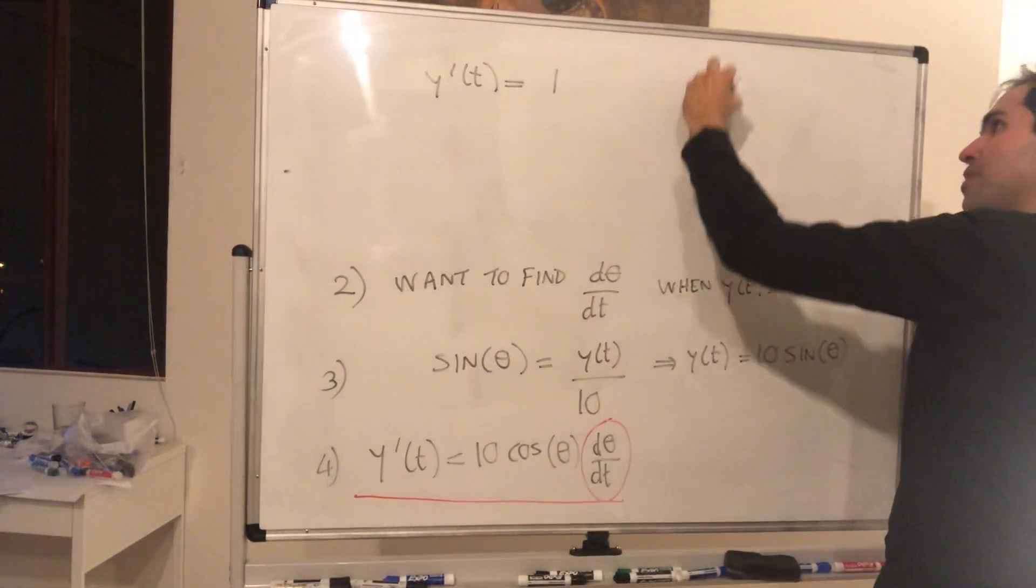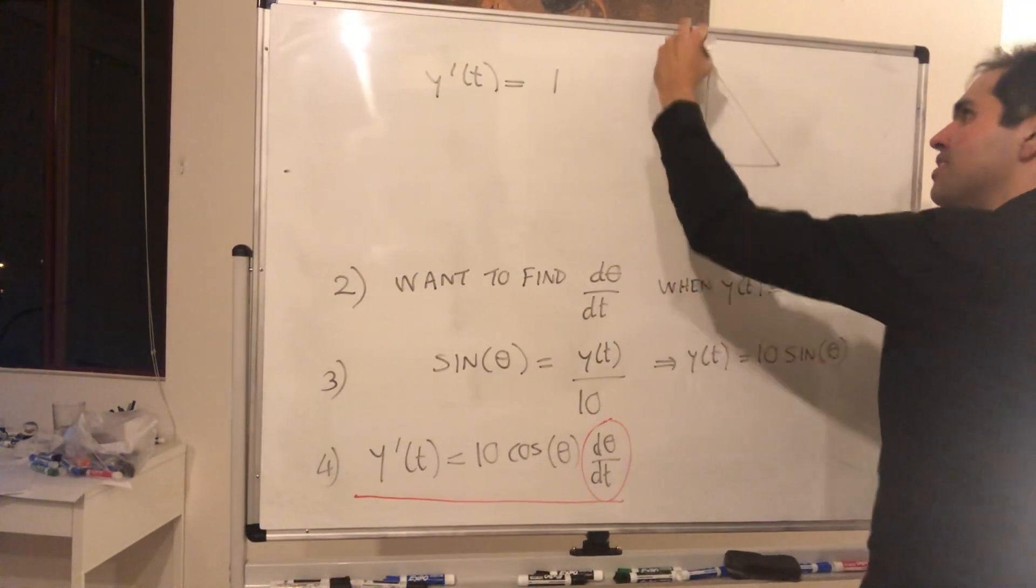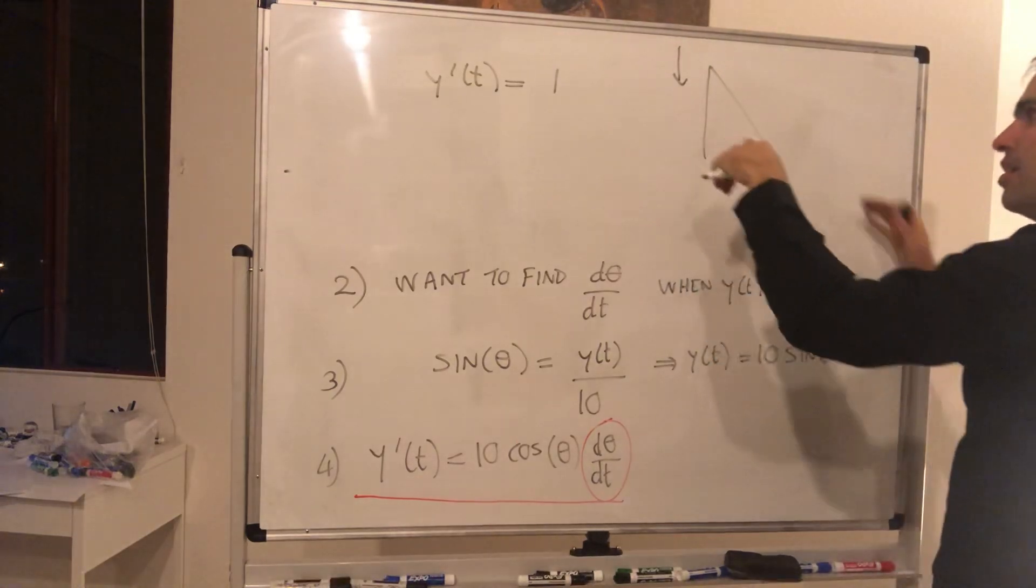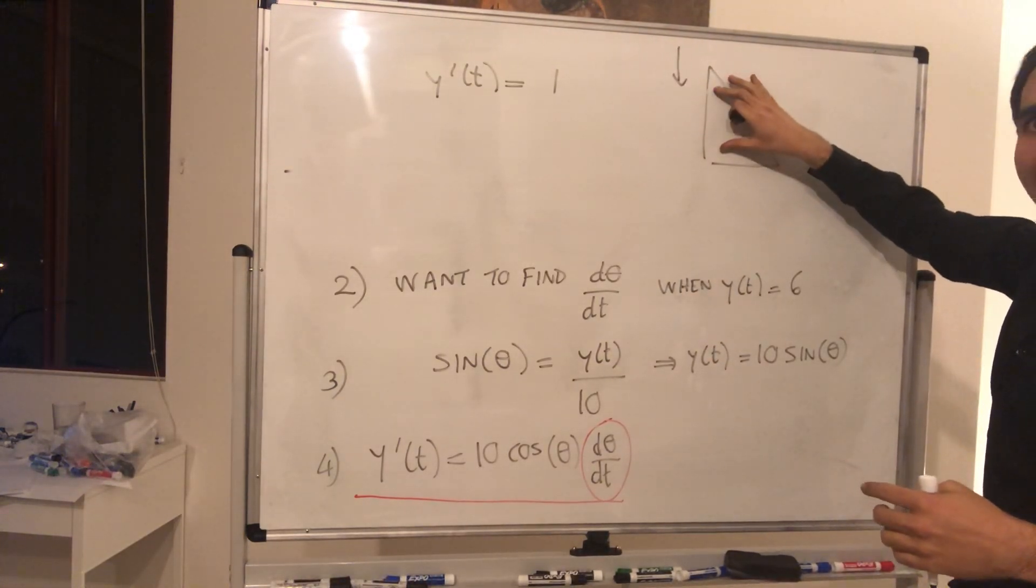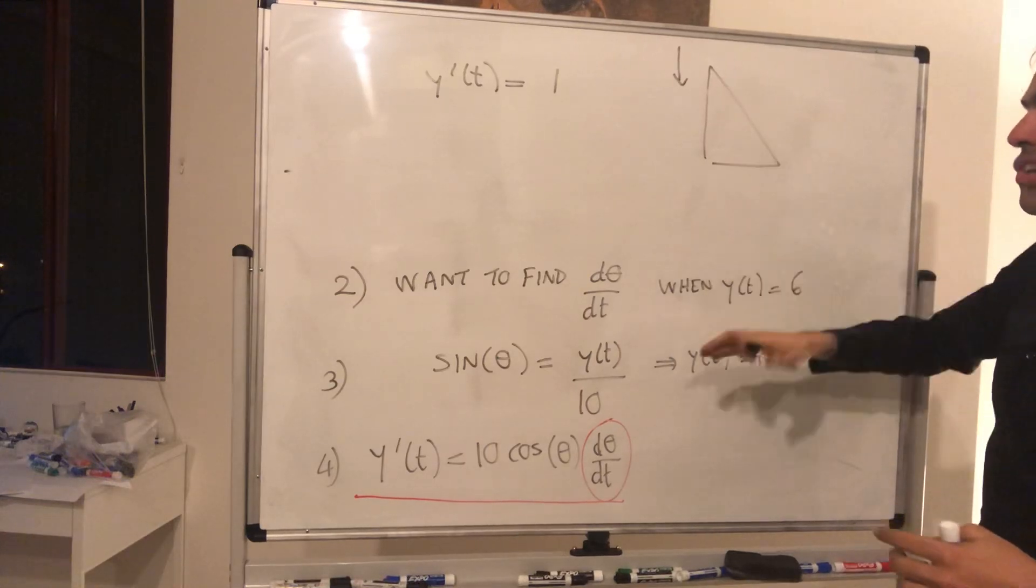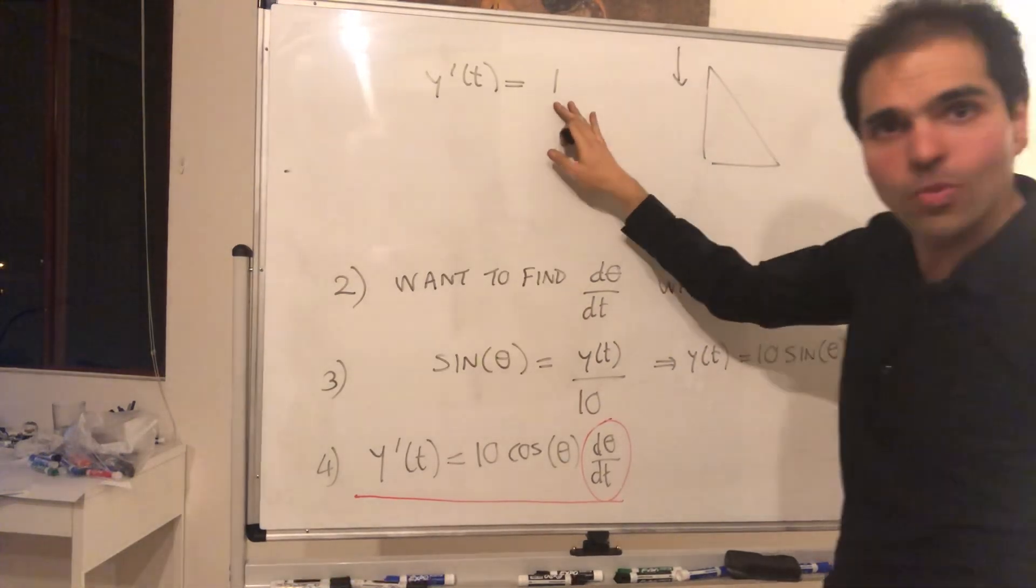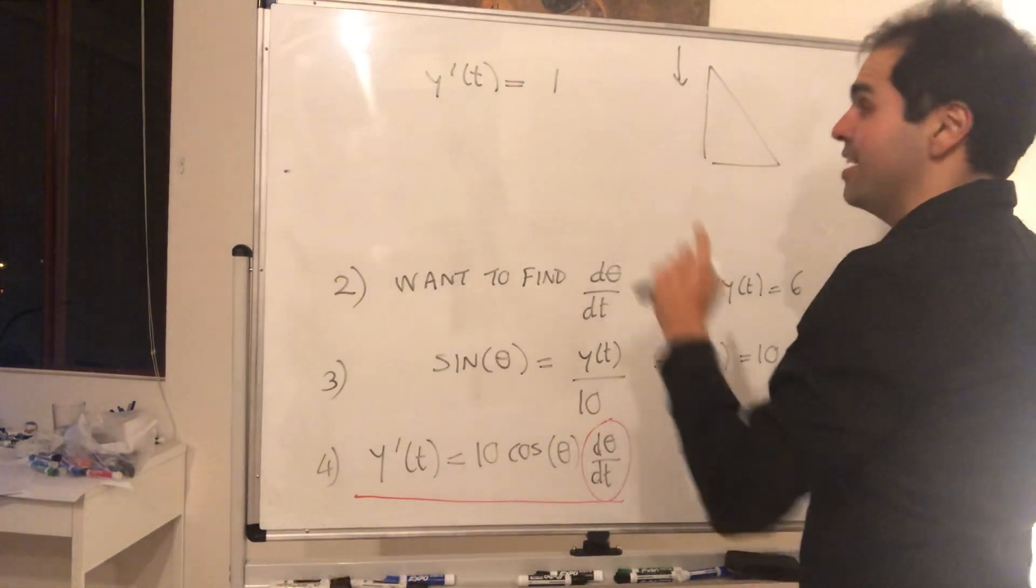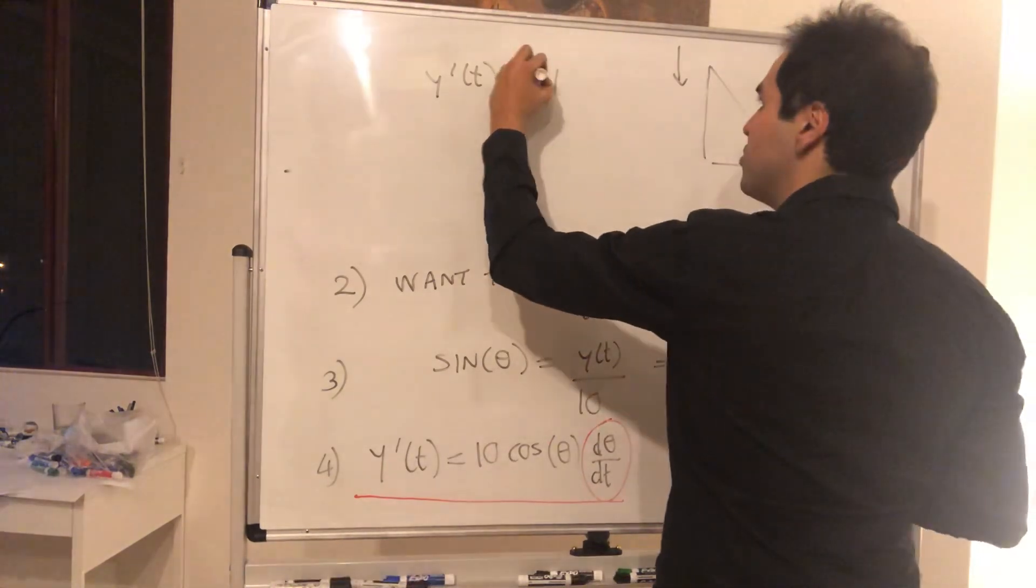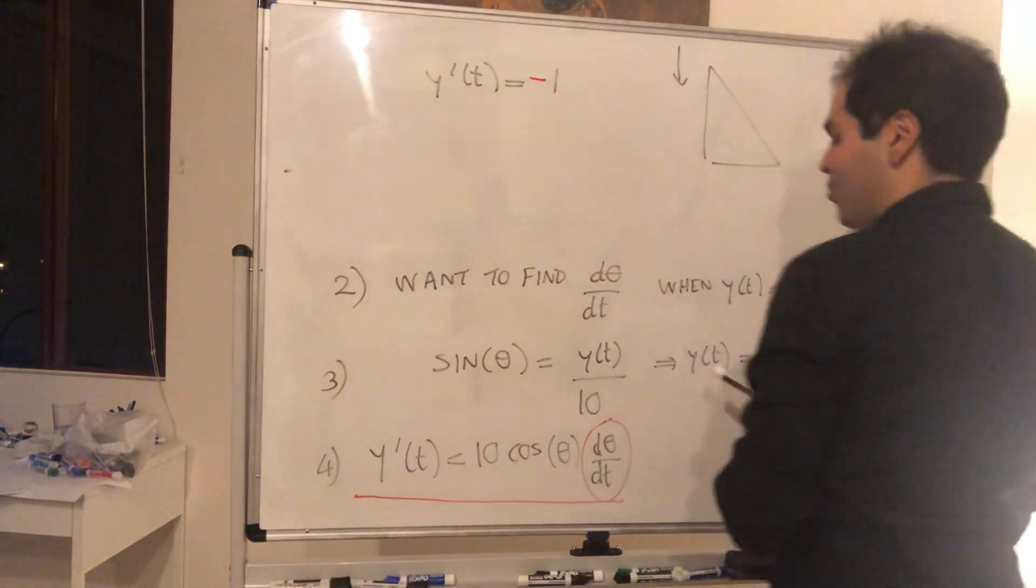But look, this doesn't quite make sense because the ladder, it's going down. In particular, the height of the ladder is decreasing. So it cannot be one because one would mean it's increasing by one foot per second. And that's why to really emphasize that y is decreasing, you put minus one.